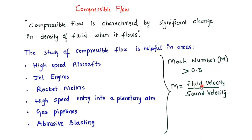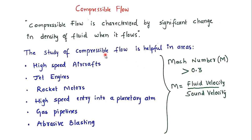Mach number is the ratio of fluid velocity at a point to the velocity of sound at that point under the given conditions. If this value is greater than approximately 0.3 to 0.4, then the type of flow is regarded as compressible flow. So if Mach number crosses 0.3, we have to consider the effects of compressibility.